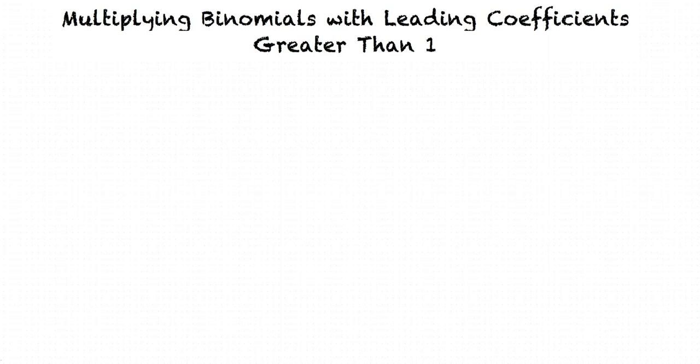This video will cover the topic of multiplying binomials with leading coefficients greater than 1. A good way to multiply two binomials is to use the FOIL method. What is the FOIL method and how does it help us solve this type of problem?